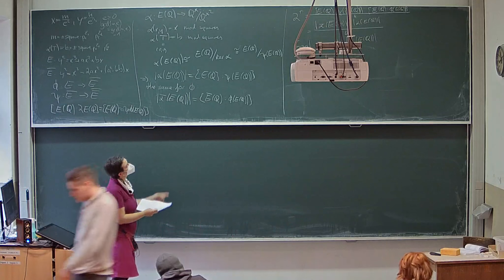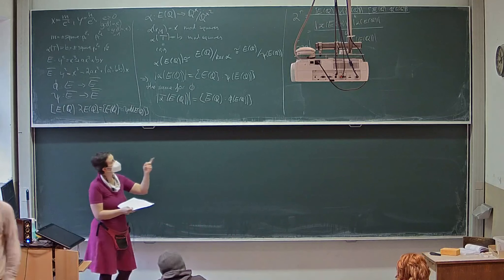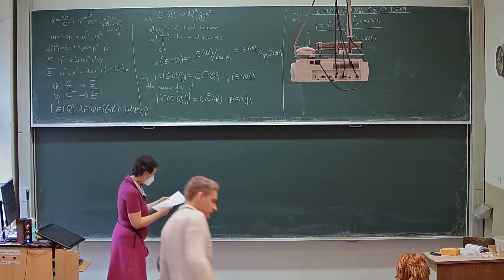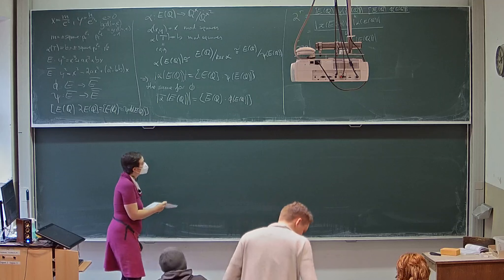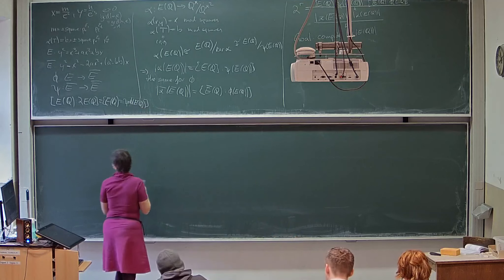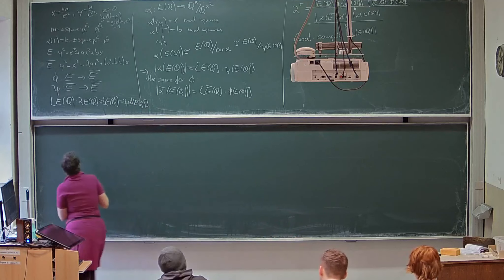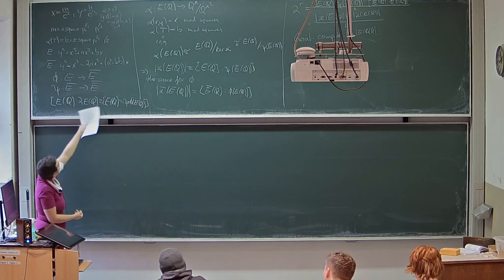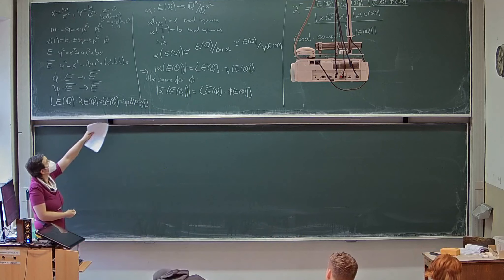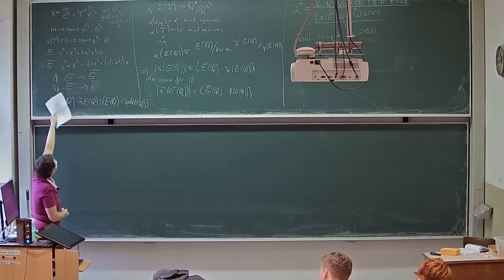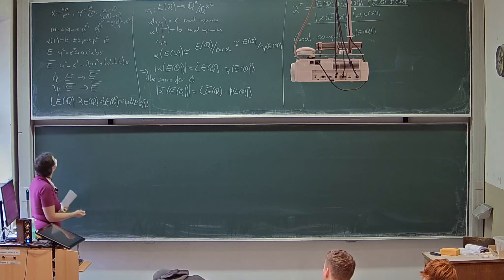Our goal is to compute the size of the image of alpha. We have that alpha of (x, y) is x modulo squares, and x is m over e squared.